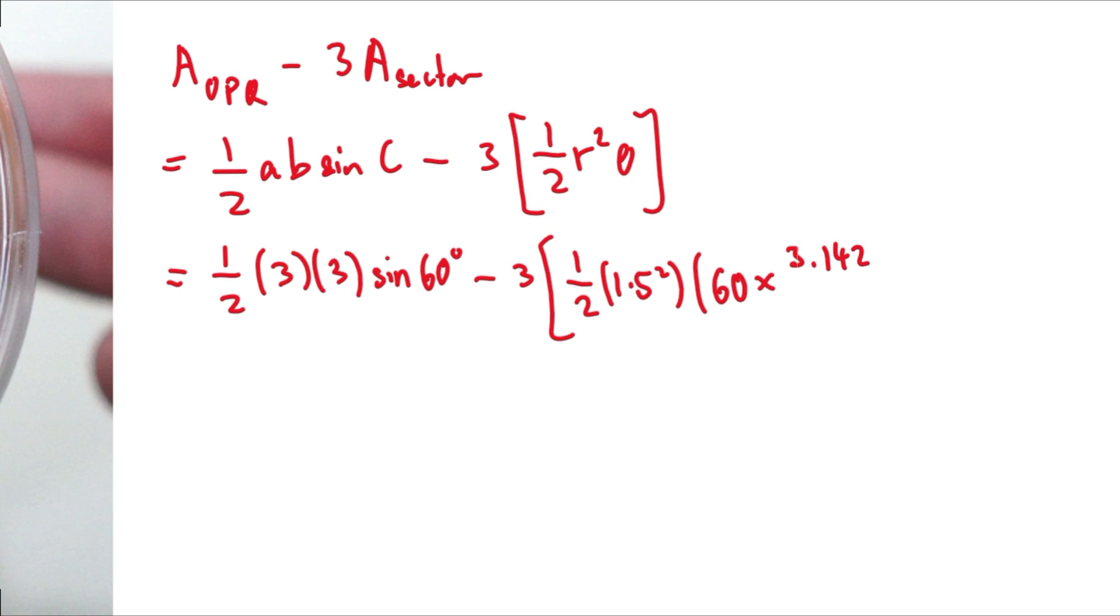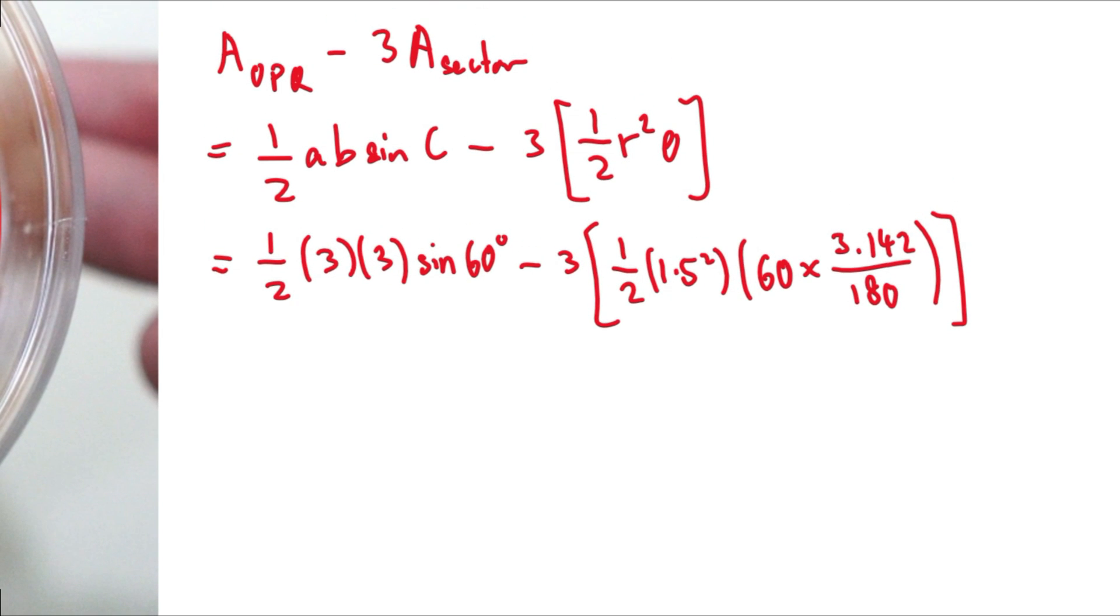I'm going to use 3.142. You need to follow the instructions of the question over 180. Sometimes the question will say use pi 3.142. Sometimes they'll give you the approximation of 22 over 7. Just follow the question. And so when we key this into the calculator, you will get 0.36 cm². This is the area in between the biscuits.